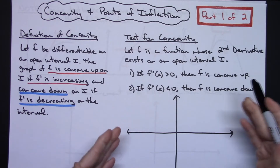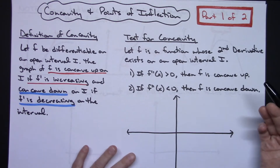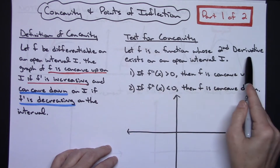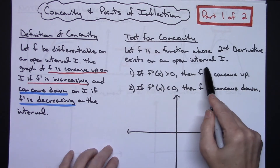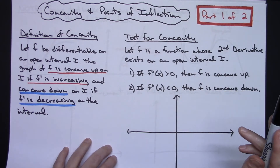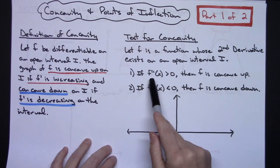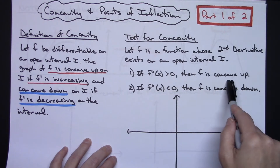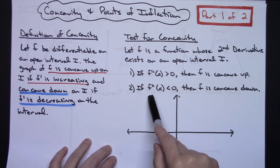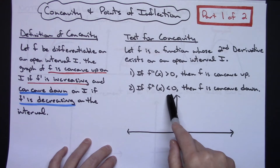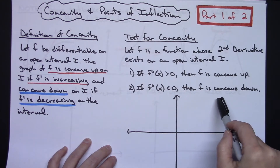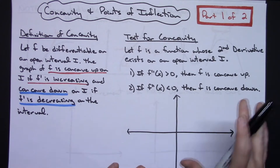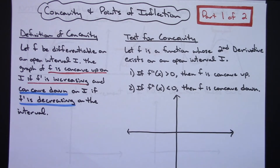The second part is the test we're going to use for finding concavity. We let f be a function whose second derivative exists on the open interval. If that second derivative is positive (greater than zero), then f is concave up. If the second derivative is negative (less than zero), then f is concave down.